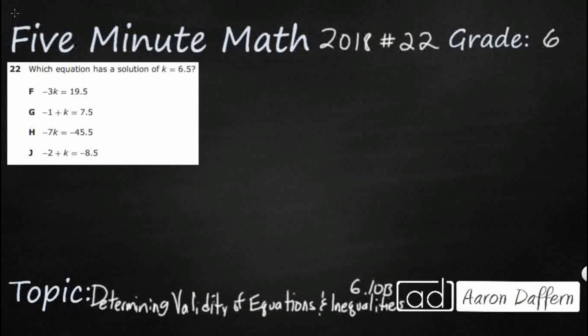So we have four equations here and we just need to see which one has a solution of k equals 6.5. There are two different ways that we can do this. The first way we're going to do is use substitution. We are going to substitute 6.5 into each of those equations and see if we get the correct answer.